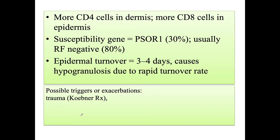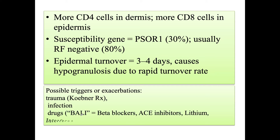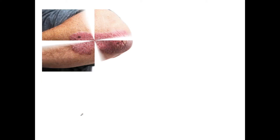Possible triggers for the disease include trauma — when a psoriatic lesion occurs after trauma, it is called Koebner's reaction or Koebner's phenomenon. The next triggers are infection, then drugs which include beta blockers, ACE inhibitors, lithium, and interferons — remembered as BARLI.